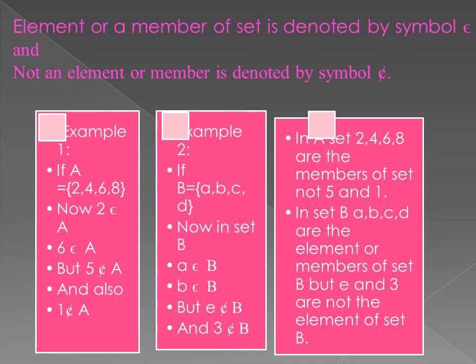In this slide we study elements or members of a set. An element or member of a set is denoted by the symbol epsilon (∈), and not a member of a set is denoted by the not-epsilon symbol (∉). In Example 1, set A = {2, 4, 6, 8}: 2 belongs to A, 6 belongs to A, but 5 does not belong to A and 1 does not belong to A. In Example 2, set B = {a, b, c, d}: a belongs to B, b belongs to B, but e does not belong to B and 3 does not belong to B.